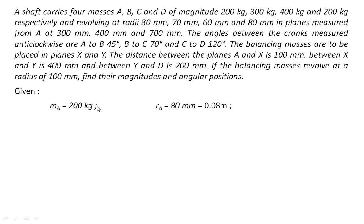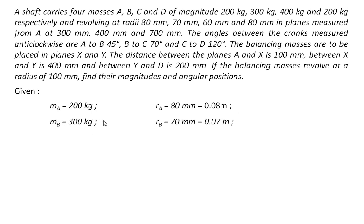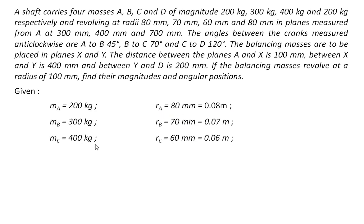We have mass A 200 kg rotating at radius of rotation 80 mm. Then there is mass B 300 kg, radius of rotation 70 mm, mass C 400 kg and radius of rotation 60 mm, mass D 200 kg and radius of rotation 80 mm. So these are the four masses rotating in different planes A, B, C, D.